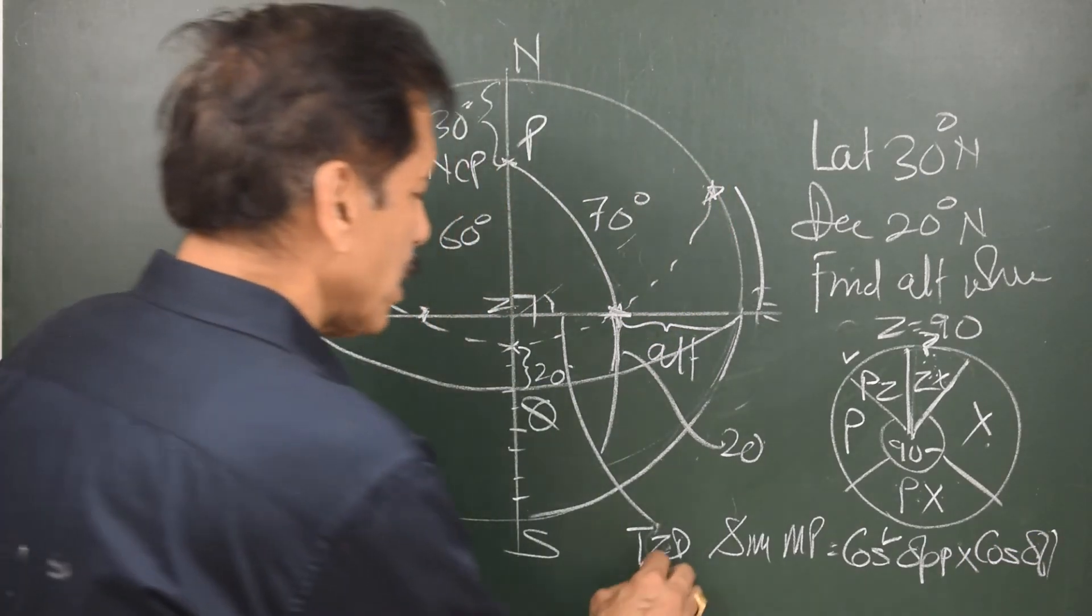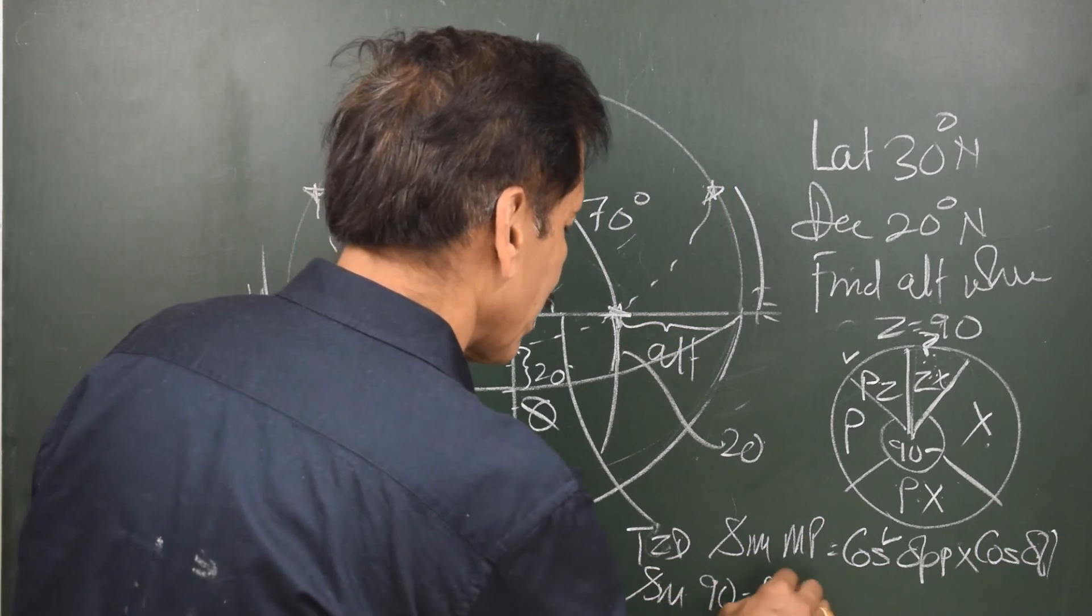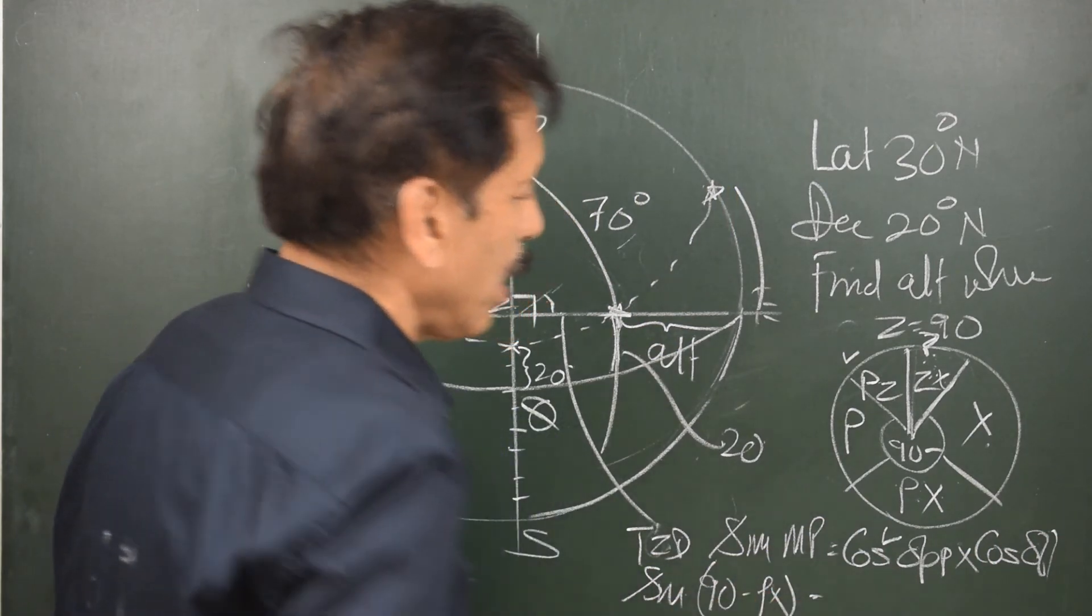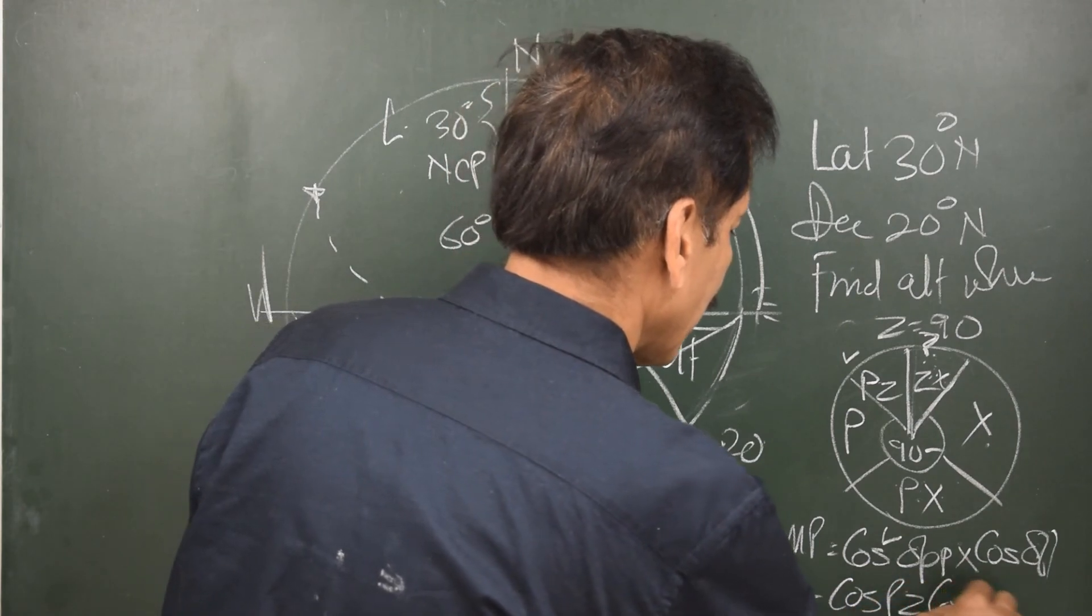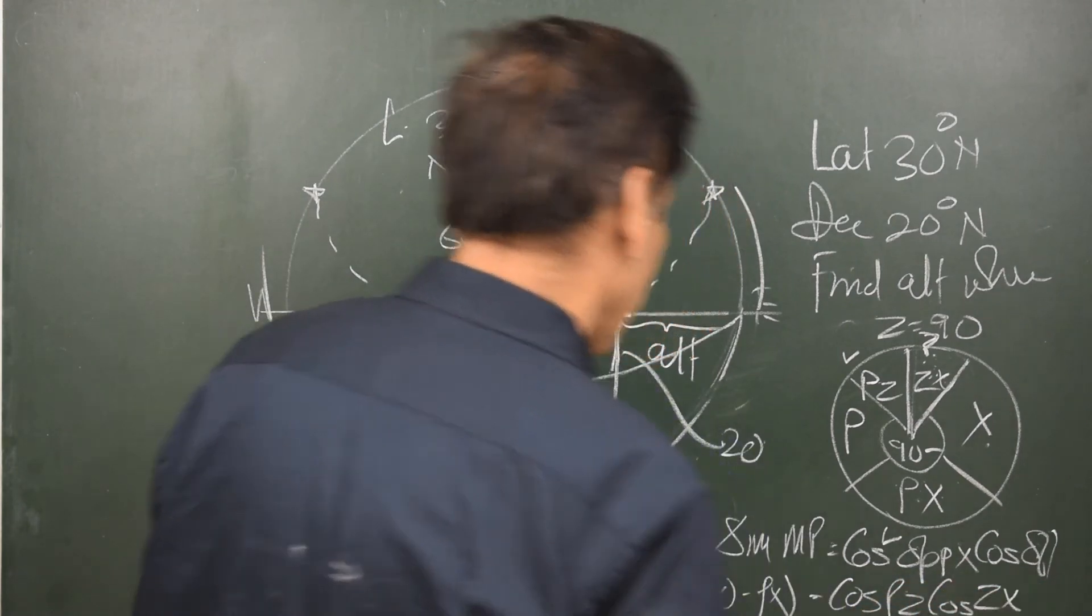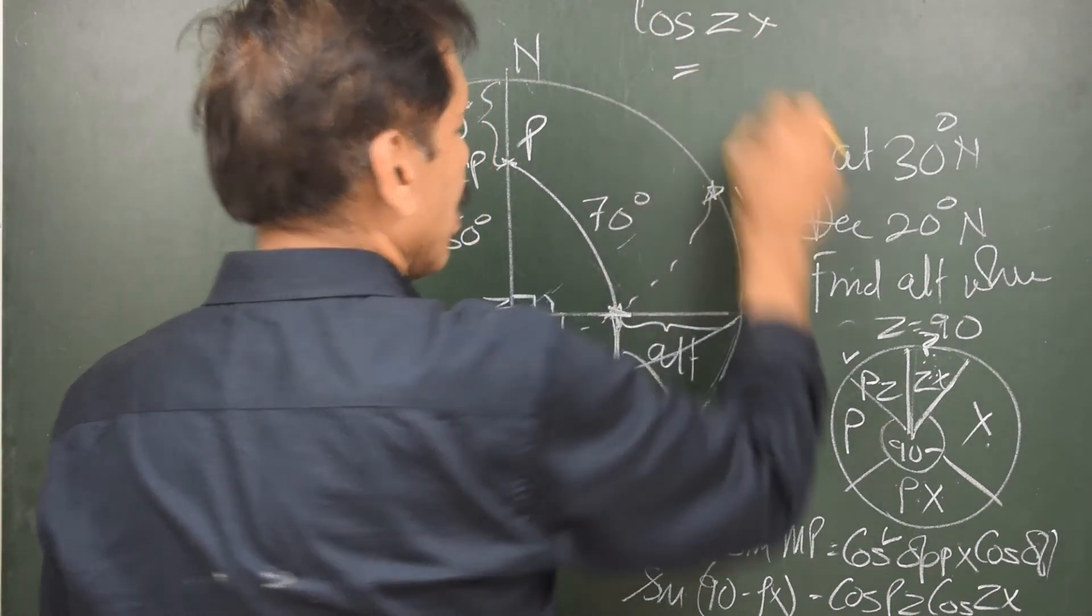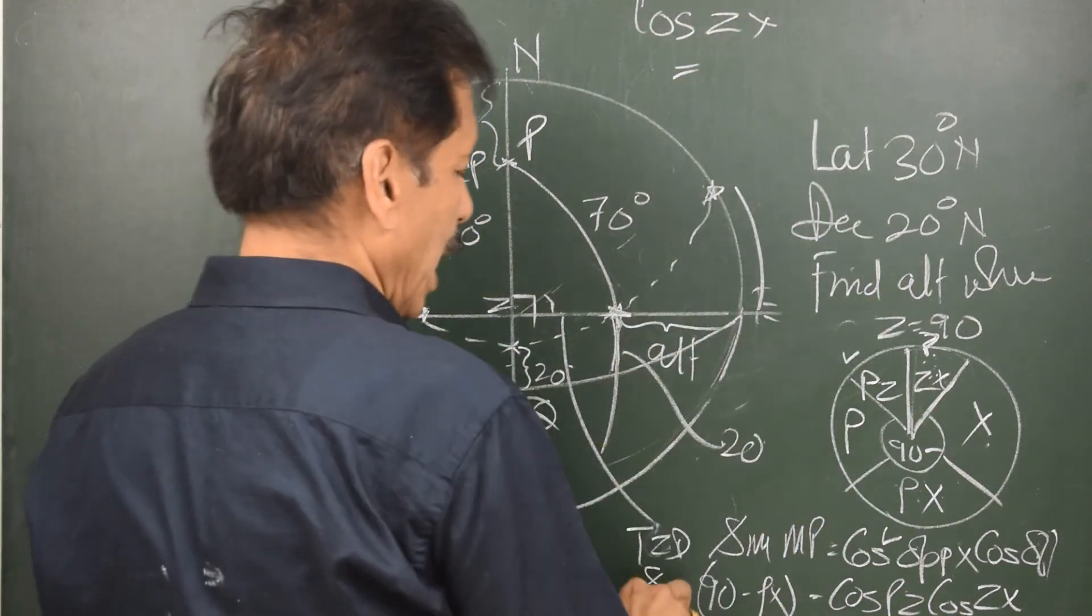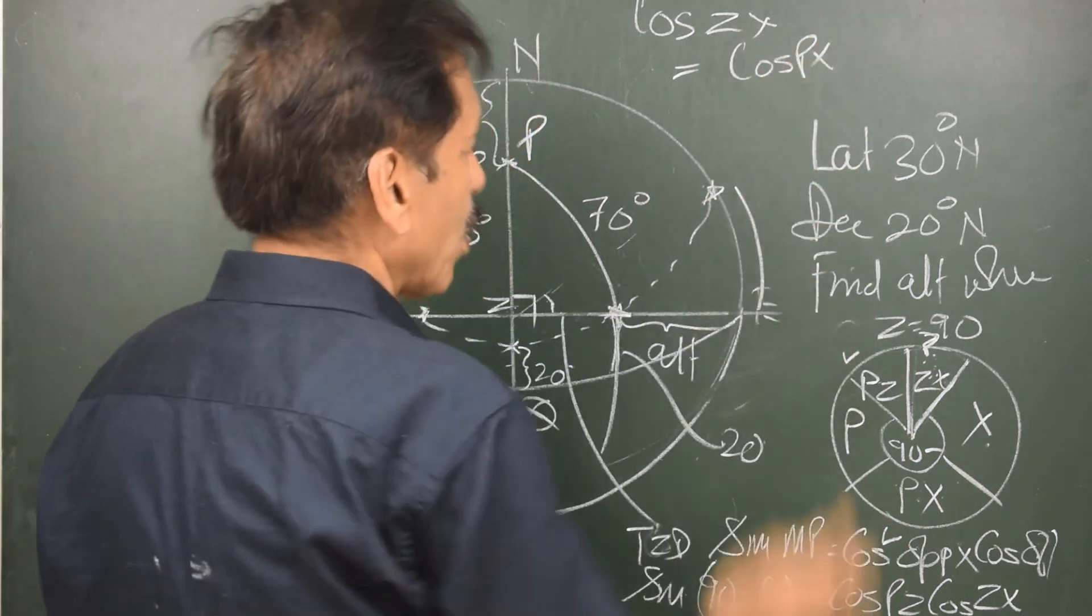That means, sin of 90 minus Px is equal to cos Pz cos Zx. Therefore, cos Zx is equal to sin 90 minus Px is cos Px upon cos Pz.